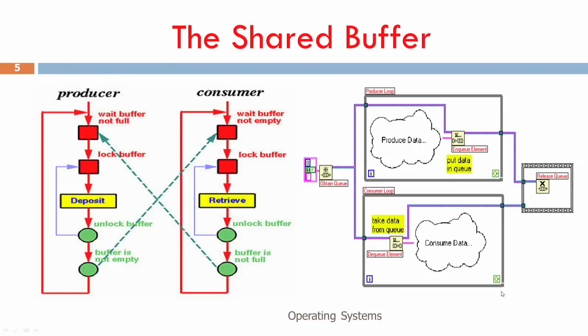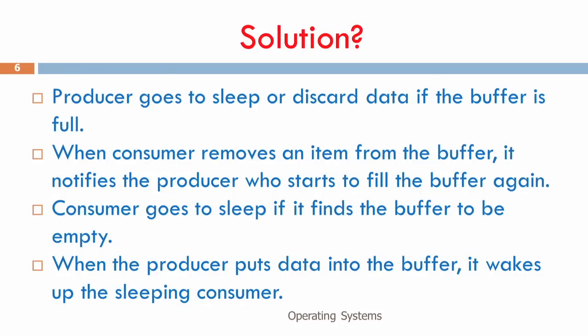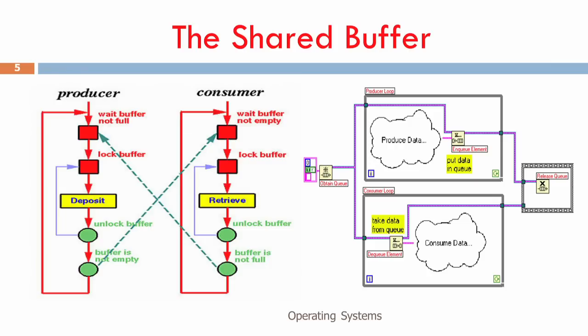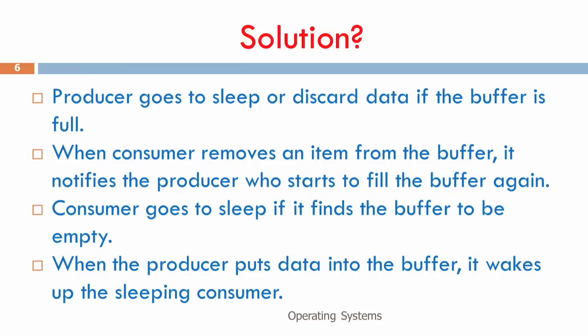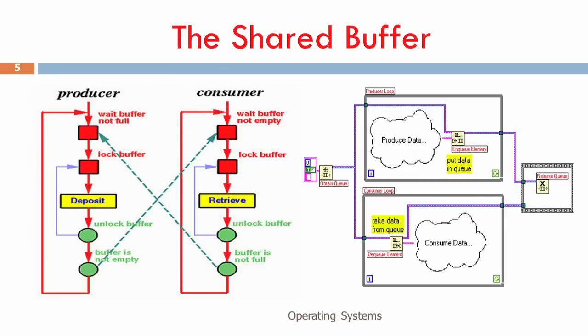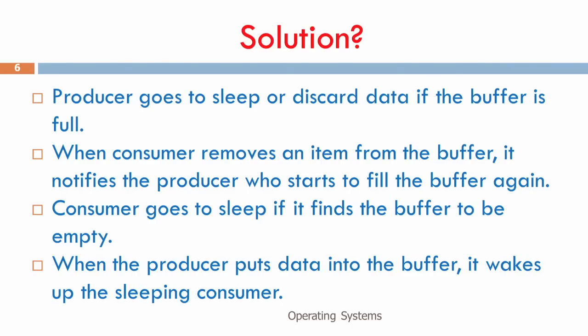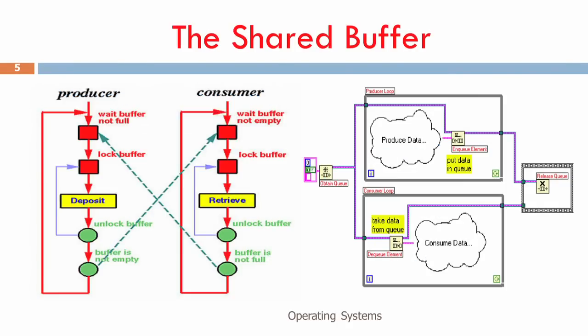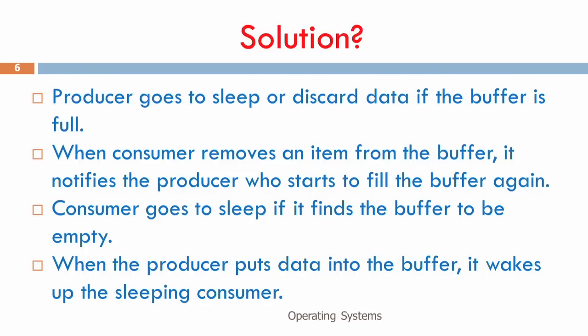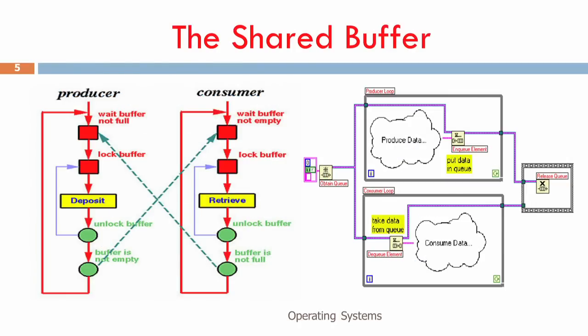The solution: the producer goes to sleep if the buffer is full, waiting on the first orange rectangle. When the consumer removes an item from the buffer, it notifies the producer — that notification is the green line from consumer to producer. Similarly, the consumer goes to sleep if it finds the buffer empty, indicated by the first red rectangle on the consumer side. Whenever the producer puts data into the buffer, it wakes up the sleeping consumer.